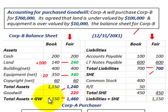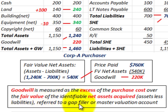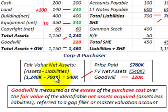Just remember, total assets at book value were $1,150,000, but the fair value was $1,240,000. Now let's look at how we'd calculate goodwill. Goodwill is measured as the excess of the purchase cost over the fair value of the identifiable net assets acquired — that's assets less liabilities. It's referred to as a gap filler or a master valuation account. To calculate goodwill, we take the fair value of our net assets: $1,240,000 in assets less $700,000 in liabilities.